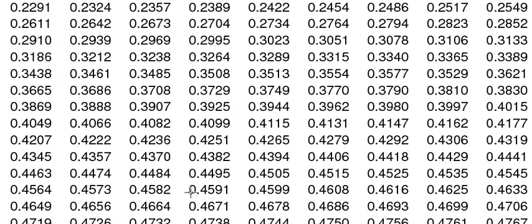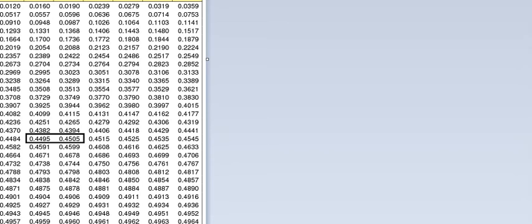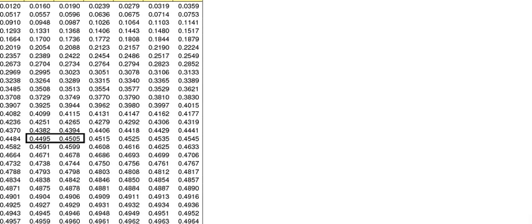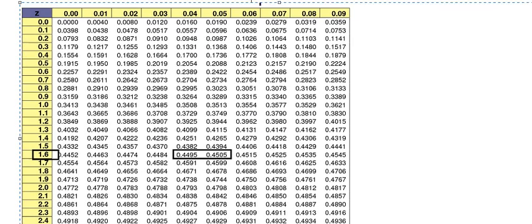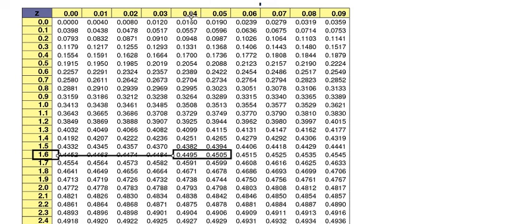Now, after we find the 0.45, you can see that the number should be in like this. So they are between 0.4495 and 0.4505. The number in here, we have that is about 1.6 on the table. 1.6 on the table in here. And we have two numbers, that is about 0.04 and 0.05. So in this situation, we will use about the number z equal to 1.645. And this is the number we need to find in here.